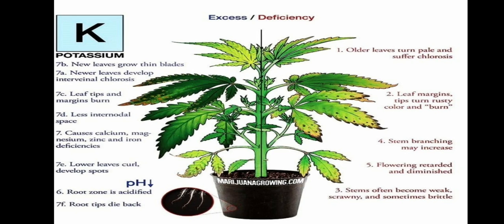On the pH scale of 0 to 14, pH 6 to 7 is neutral. When pH decreases below 6, it is acidic; above 7 is alkaline. Excess potassium actually decreases the pH, causing acidification of the root zone below 6. This leads to root tip dieback.